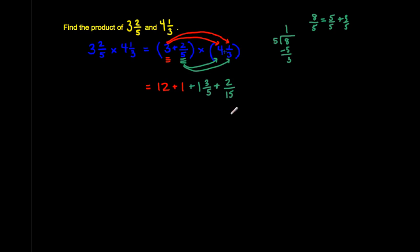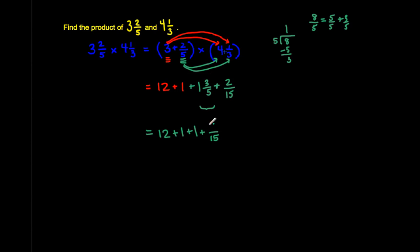Now, I can only add fractions when they have the same denominator — the same unit fraction. These don't have the same denominator, but I can convert three-fifths into fifteenths by multiplying by three. If I multiply the denominator by three, I also multiply the numerator by three to make an equivalent fraction. So I'm going to rewrite this as 12 plus 1 plus one and three-fifths, and write the equivalent fraction of three-fifths with a denominator of 15: three times three gives nine, so three-fifths becomes nine-fifteenths.